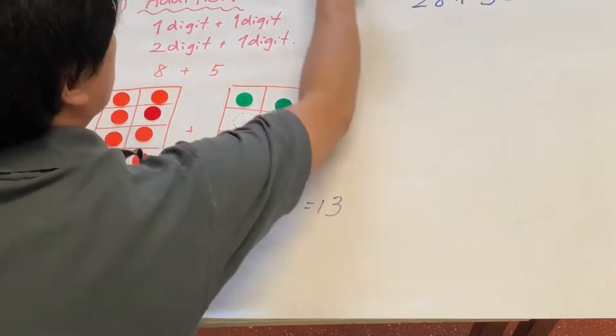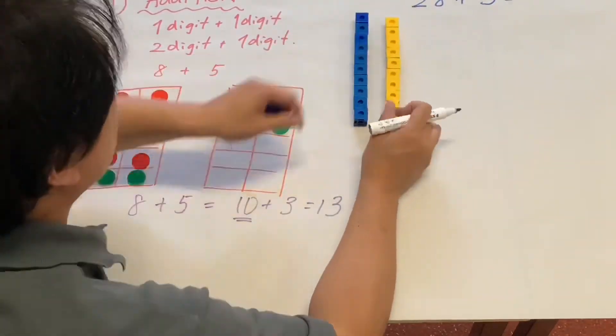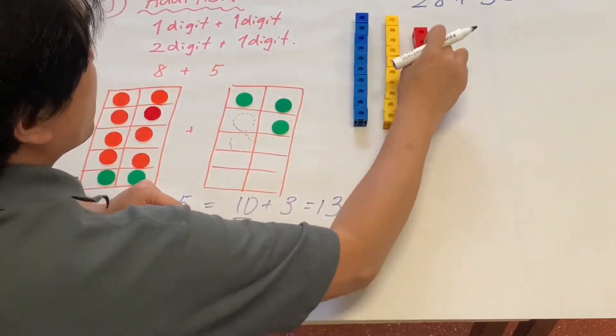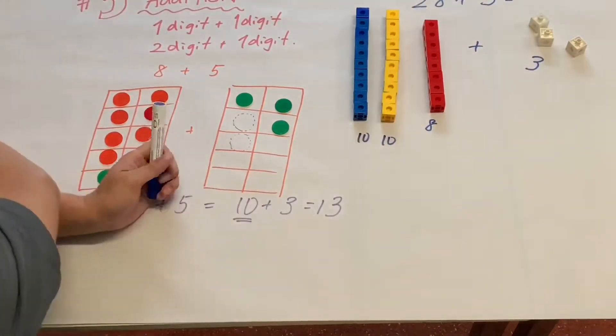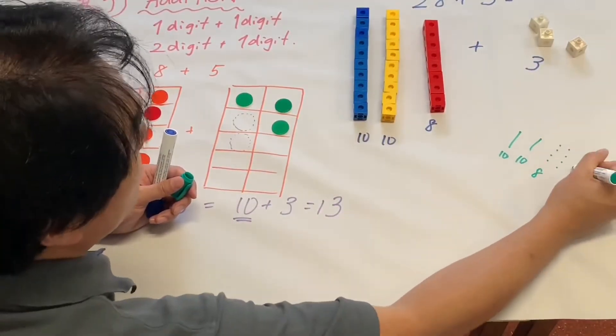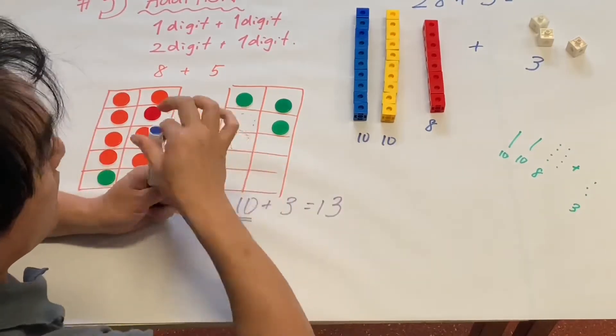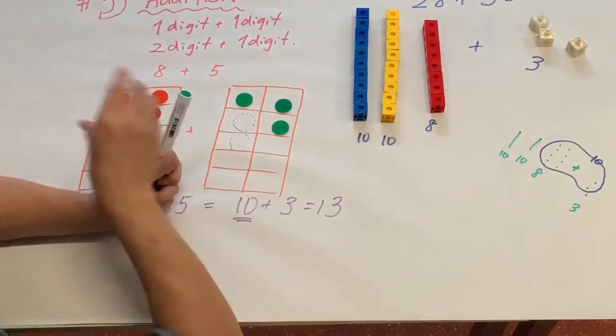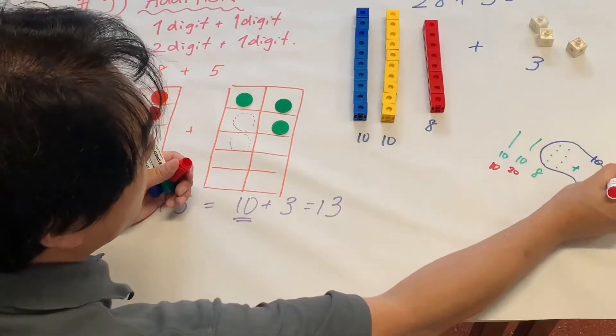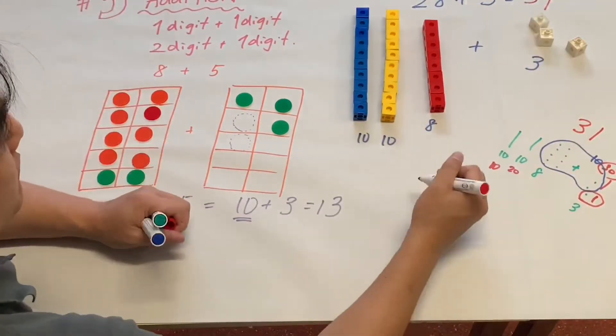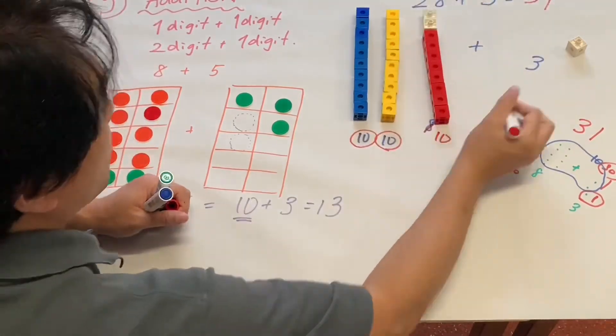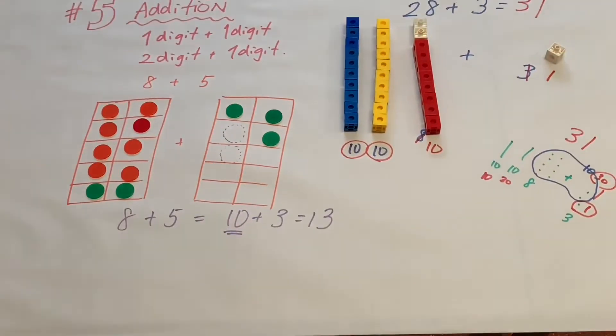Now this is twenty-eight plus three, so two digits plus one digit. Now using concrete material as well as the drawing representation, students can see 28 plus three. Twenty-eight plus three is twenty and eight, and two are added to ten, then the answer is thirty-one.